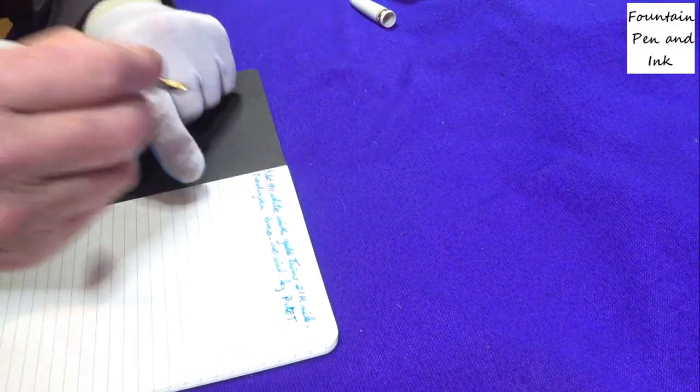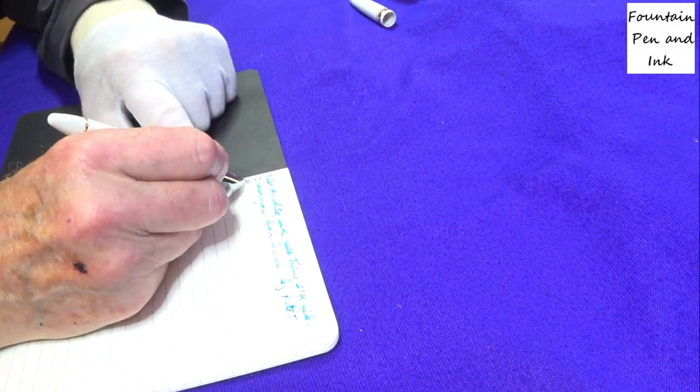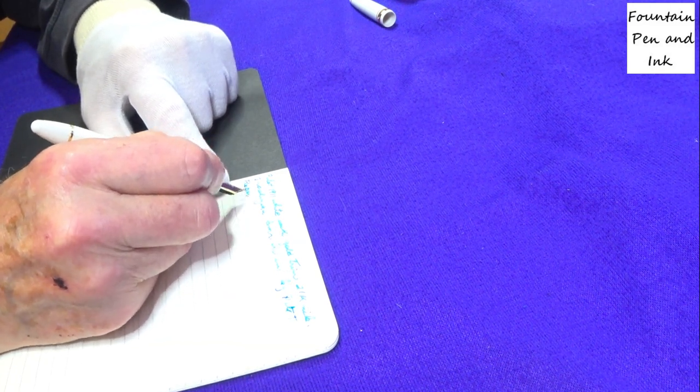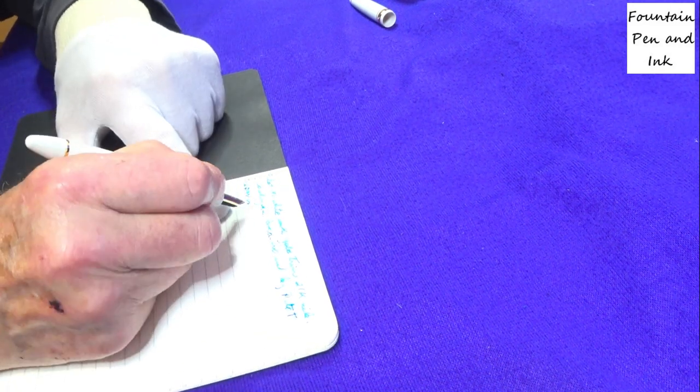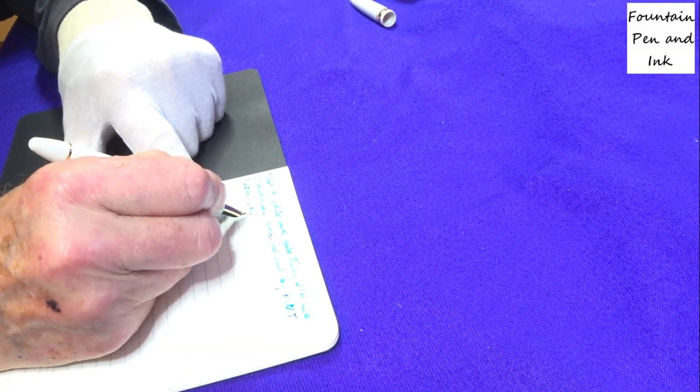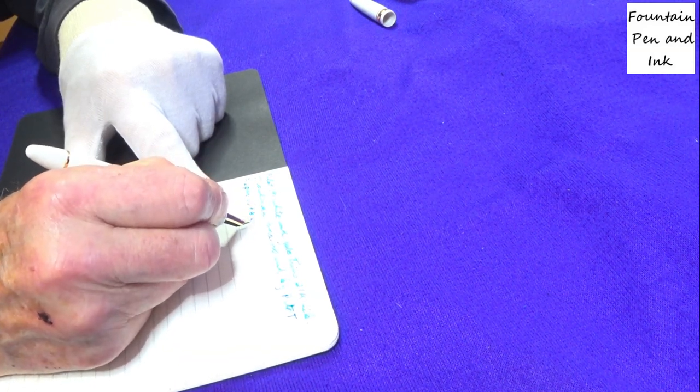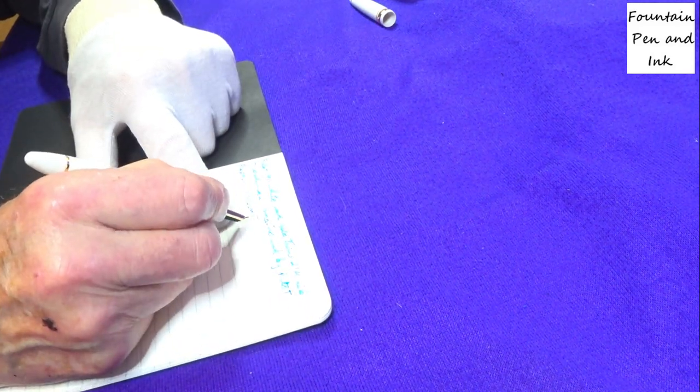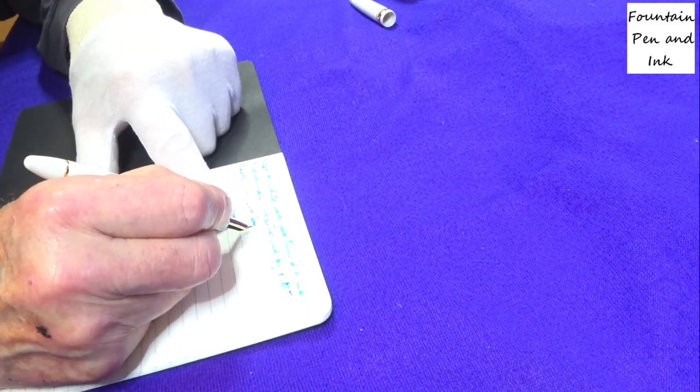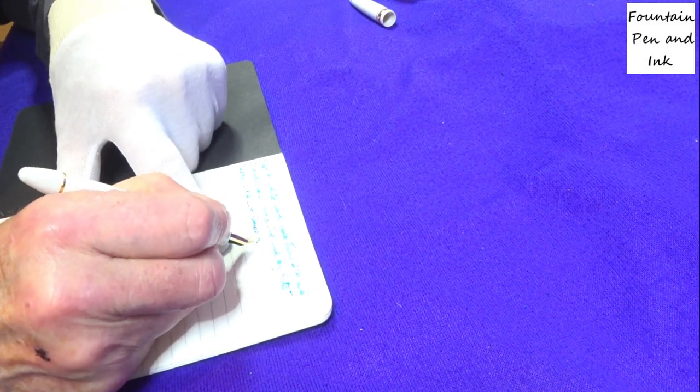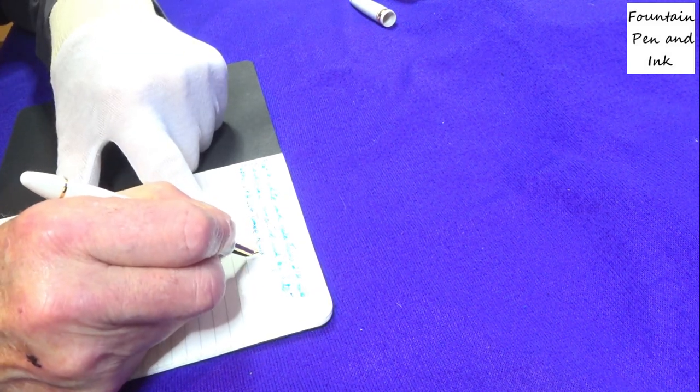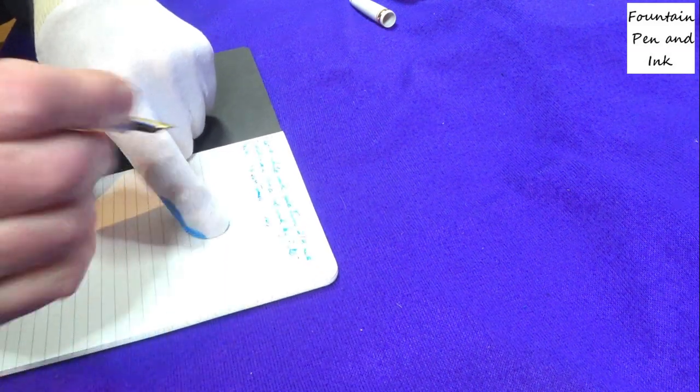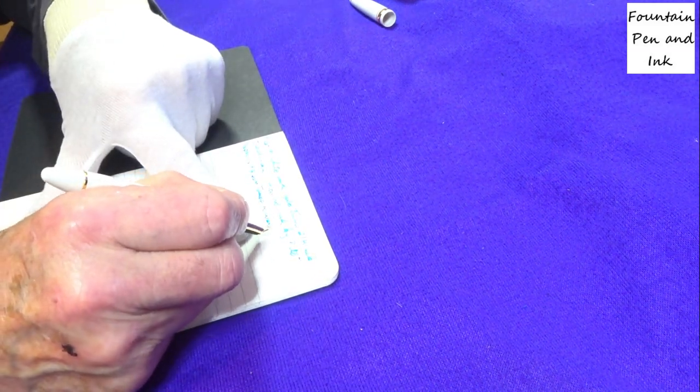The paper. Paper is 68 g s m Tomoe River paper.